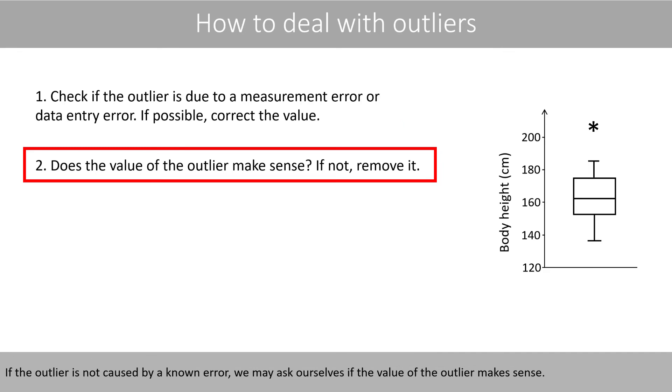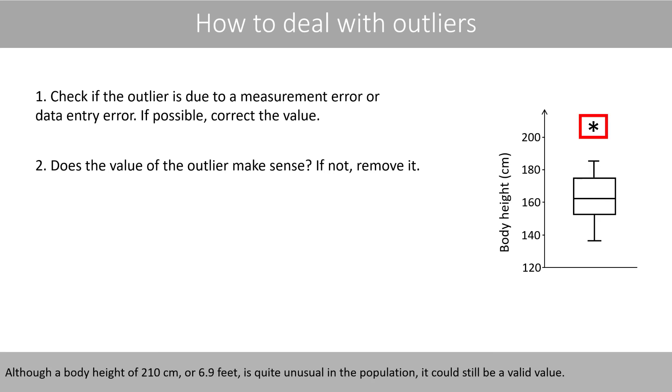If the outlier is not caused by a known error, we may ask ourselves if the value of the outlier makes sense. Although a height of 210 cm or 6.9 feet is quite unusual in the population, it could still be a valid value.